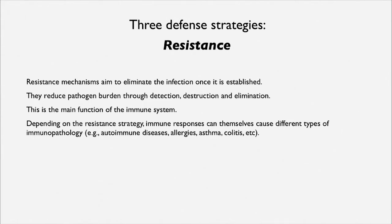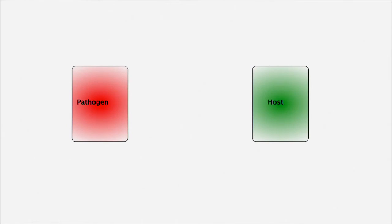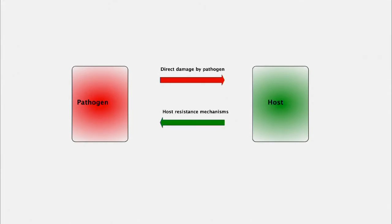Autoimmune disease, allergies, asthma, colitis — things like that. So if we think about that schematically, we have a pathogen and we have a host. The pathogen can cause some direct damage to the host. The host can resist the pathogen; however, the resistance mechanism can itself cause damage through the immune response, through inflammation and things like that.